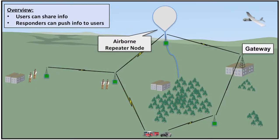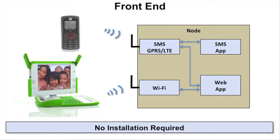The way our system is going to work is we'll have an ad hoc network of nodes, some of which may be airborne, static, or attached to a mobile platform. You can share information, search the network, and responders can also push information out to end users. On the front end, there's no installation required — you can jump onto our network in an emergency with your phone or tablet and start talking to us over SMS or a locally hosted web page.